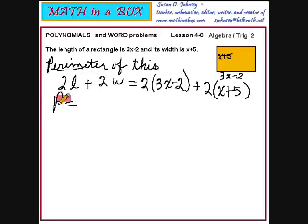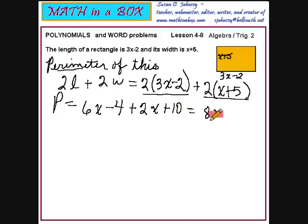Let's see. P equals. Here, if we use the distributive property, we will have 6x minus 4. And over here, if we also use the distributive property, we will add 2x plus 10. This simplifies to 8x plus 6.